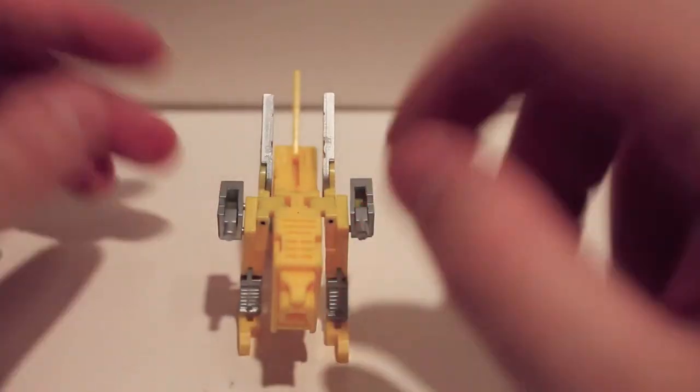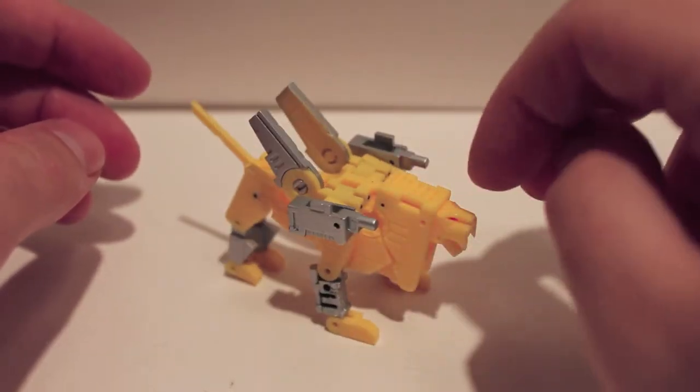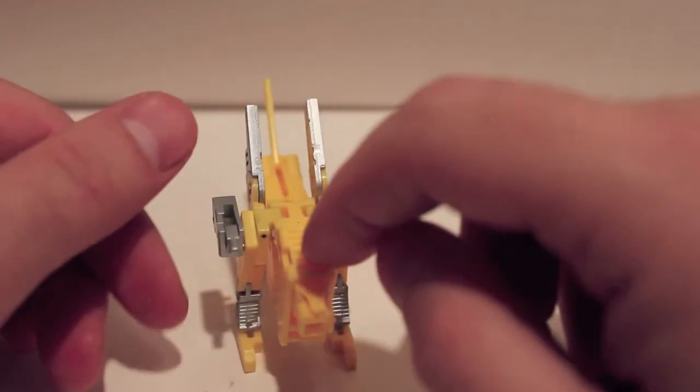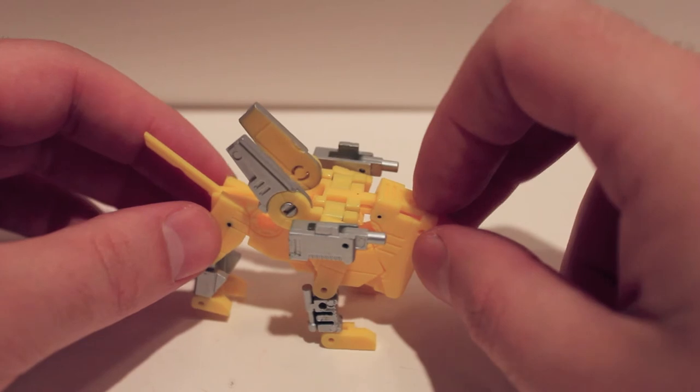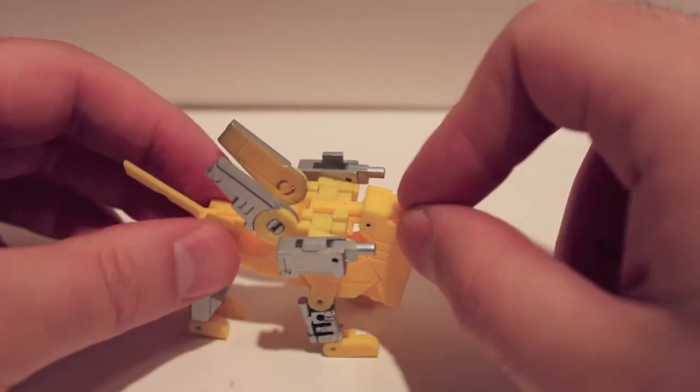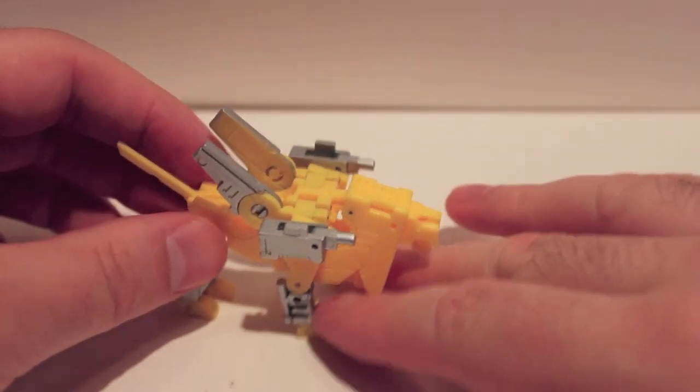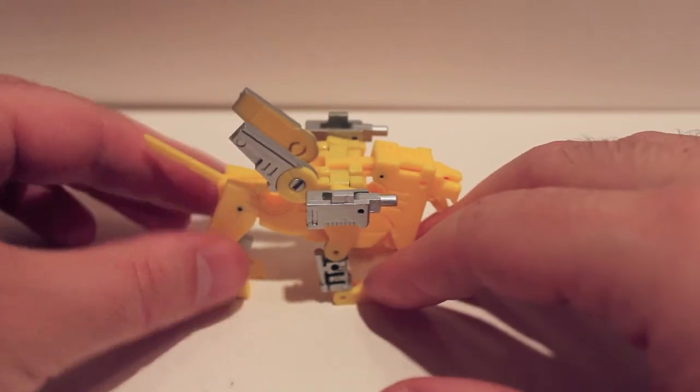This has been the video review. He does need Reprolabels though, like a nice Autobot logo on his head or something. He could use a little bit of Reprolabel love. But yeah, this has been the video review for KFC Toys Iron Paw.